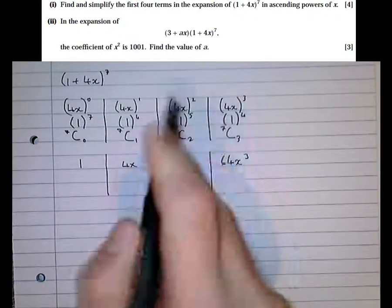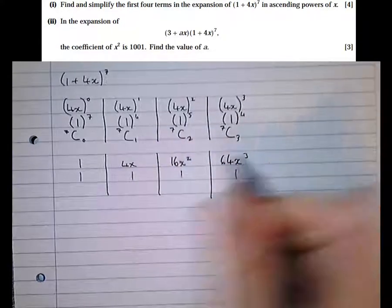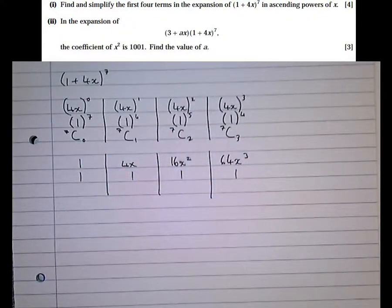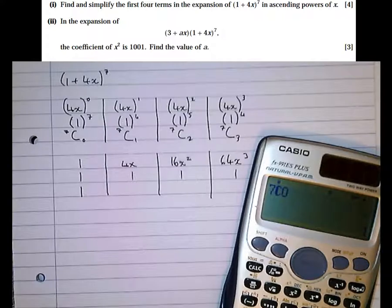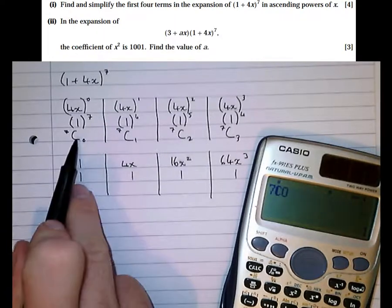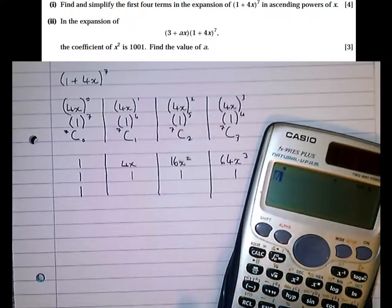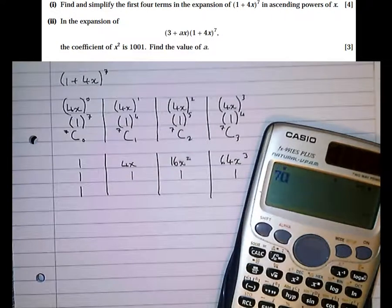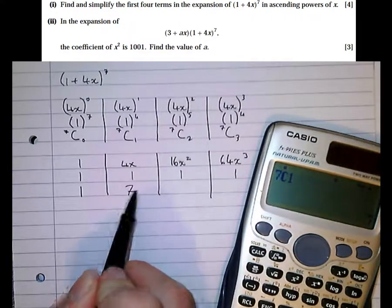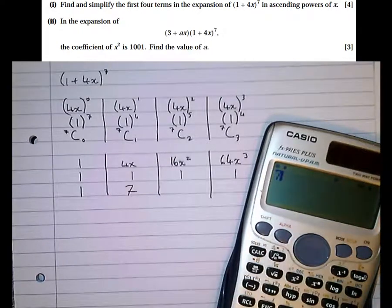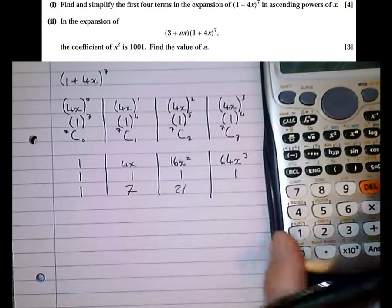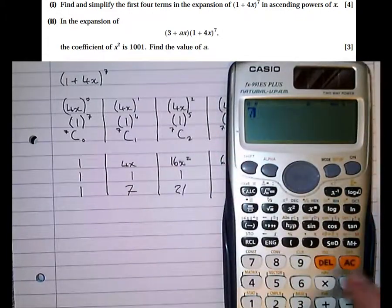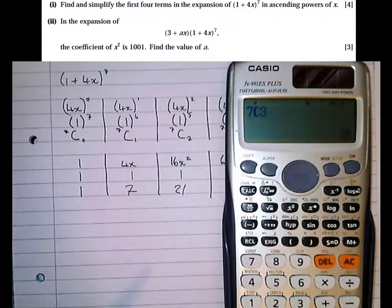All of these terms equal 1, and then 7c0, let's pop that in the calculator. 7c0 is 1, and anything c0 is 1, so that first one you can always just write as 1. 7c1 is 7, 7c2 is 21, and 7c3 is 35.